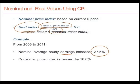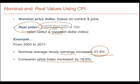Over this time period, the consumer price index increased by 16.6%. Looking at these two numbers, we can immediately see that in real terms — that is, in purchasing power terms — workers are better off in 2011 than in 2003 on average. The increase in earnings was 27.5%, the increase in the CPI was 16.6%, and consequently there was a real increase in earnings during this period.